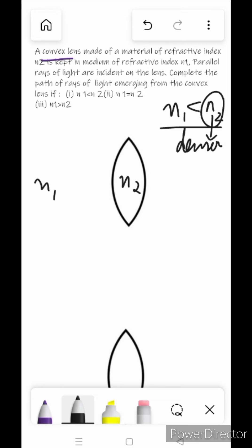So when we move in this convex lens from rarer to denser medium, the light rays will converge.